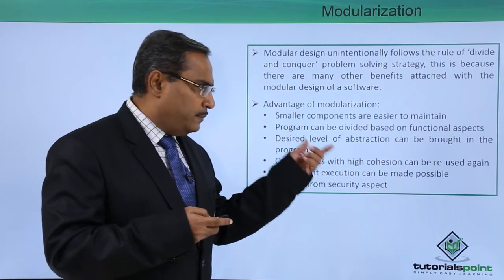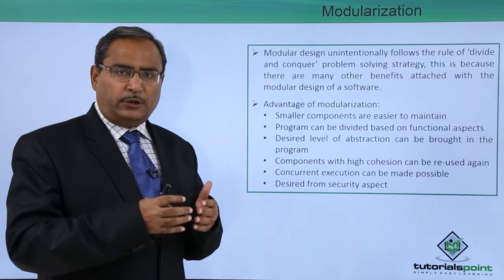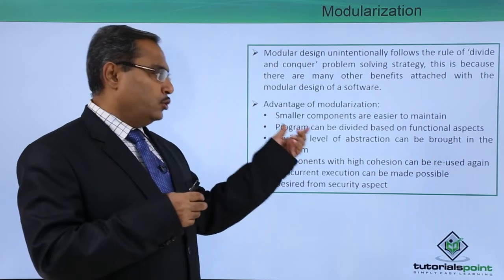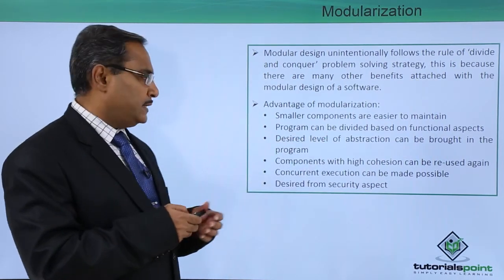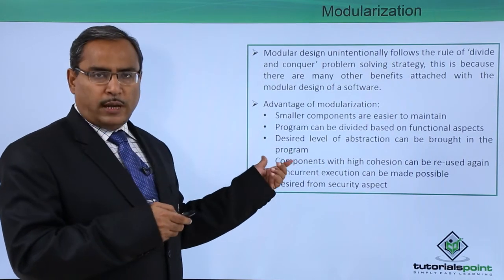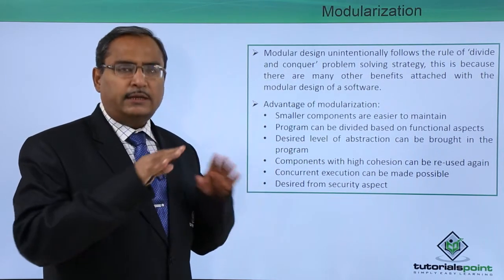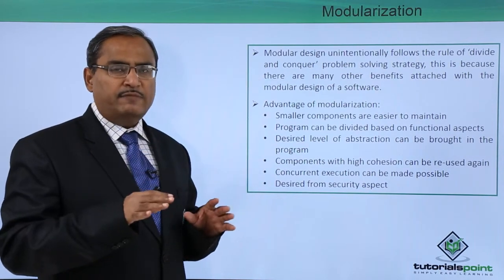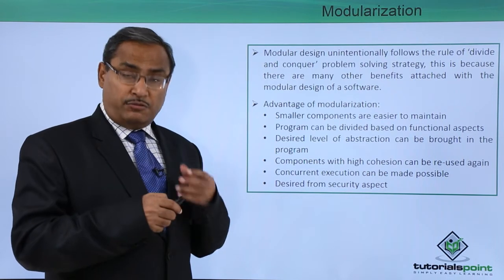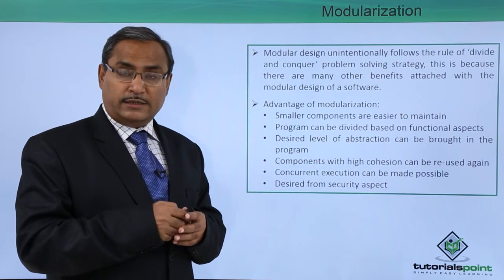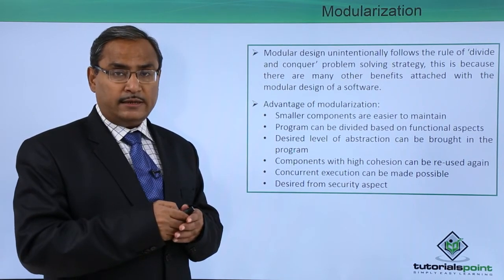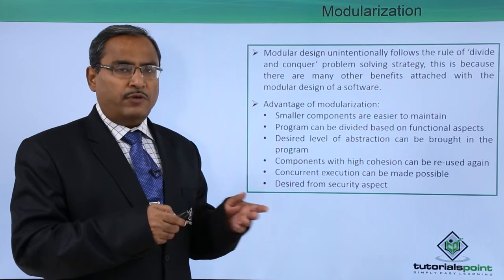A program can be divided based on functional aspects, since a particular software implements different functional requirements. A desired level of abstraction can be brought into the program — we can think of the program as being divided into multiple different levels. As discussed in the earlier video, a software design can have three different levels of abstraction: architectural design, high level design, and detailed design.